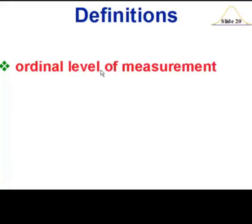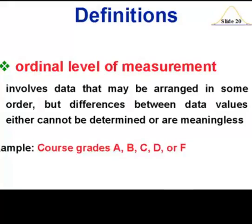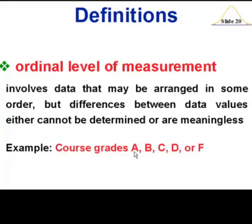Ordinal also has names, but the names put them in an order. For example, if you look at course grades — A, B, C, D, F — these are names of grades, but the order definitely makes a difference. An A is certainly much different than a D, and is better or higher than a D. So the order makes a difference here.